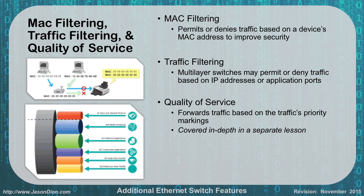We can also do MAC filtering, which permits or denies traffic based on a device's MAC address to improve security. The switch is configured so that only people on the allowed list can access the network, or conversely you can create a denied list. If John has been doing bad stuff on the network, you can deny his computer based on its MAC address — every time he tries to plug in, no matter which drop he uses, he gets denied. If you're very security-minded, you can do the opposite and allow only specified MAC addresses, though that means entering every MAC address on every switch.